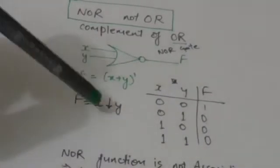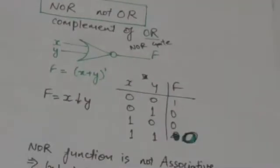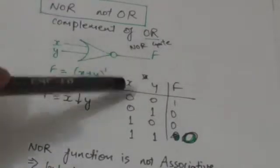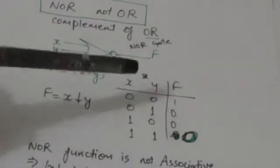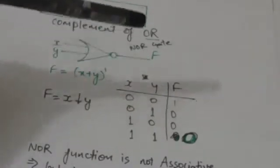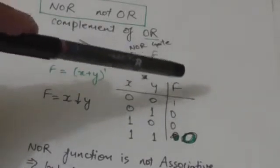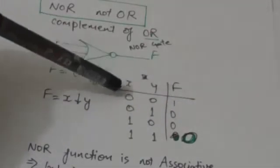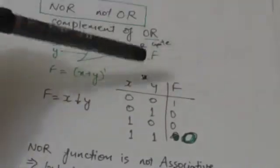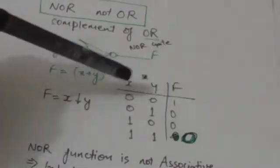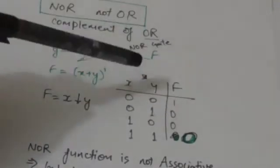This is the operator symbol of the NOR function. This is the truth table of the NOR function. Its value would be 1 if and only if both inputs are 0 — that is, if both binary variables X and Y are 0 — because it is the complement of the OR function.